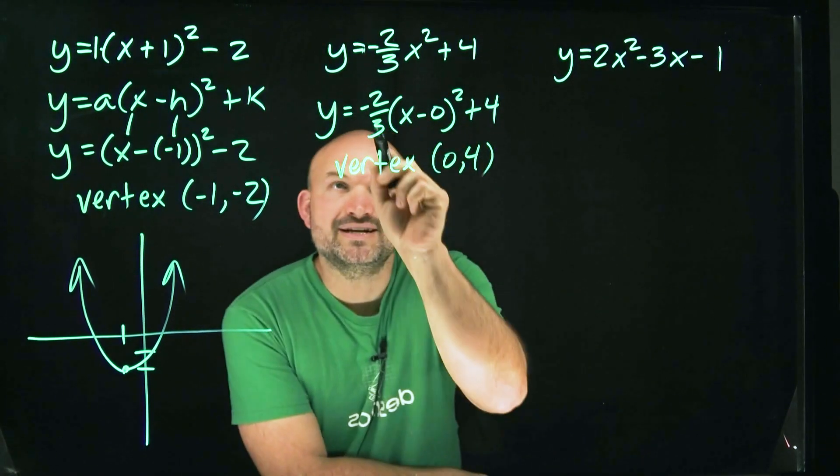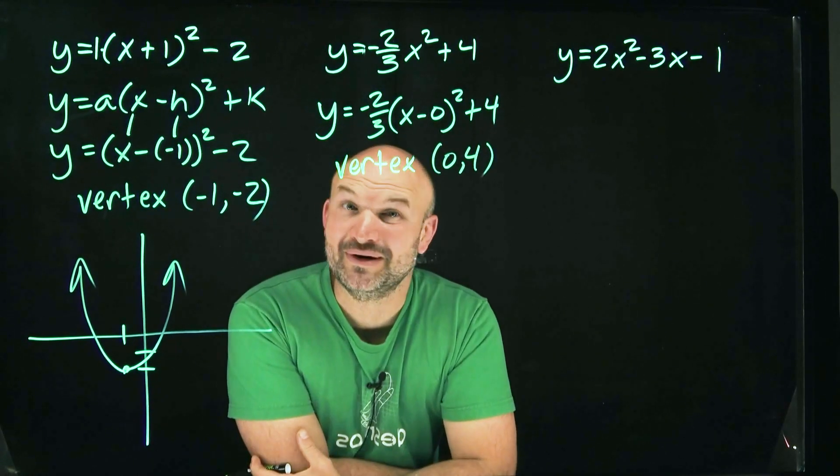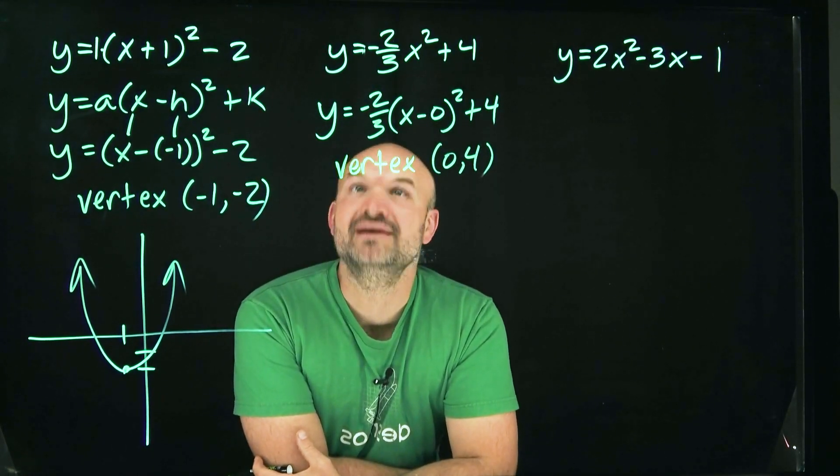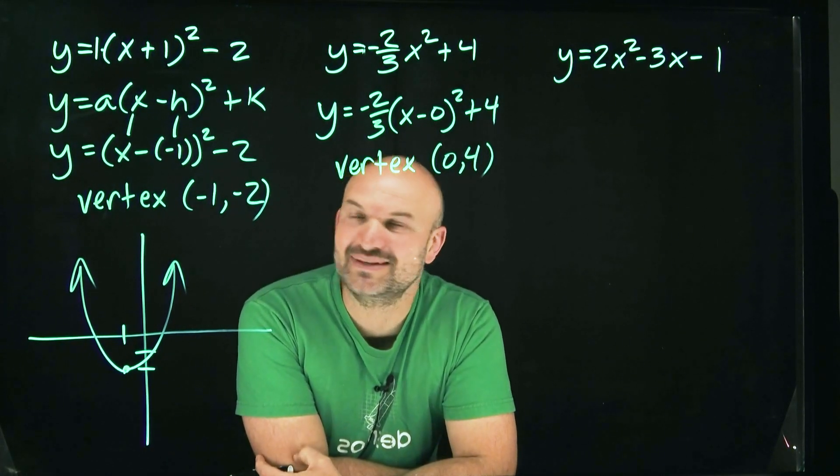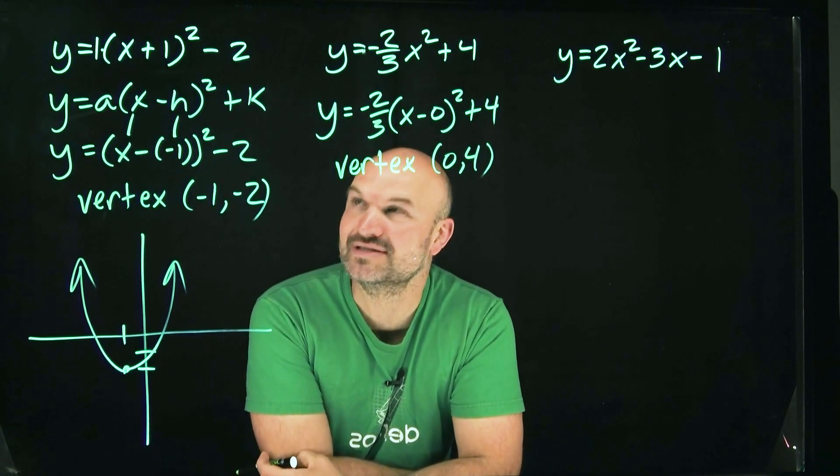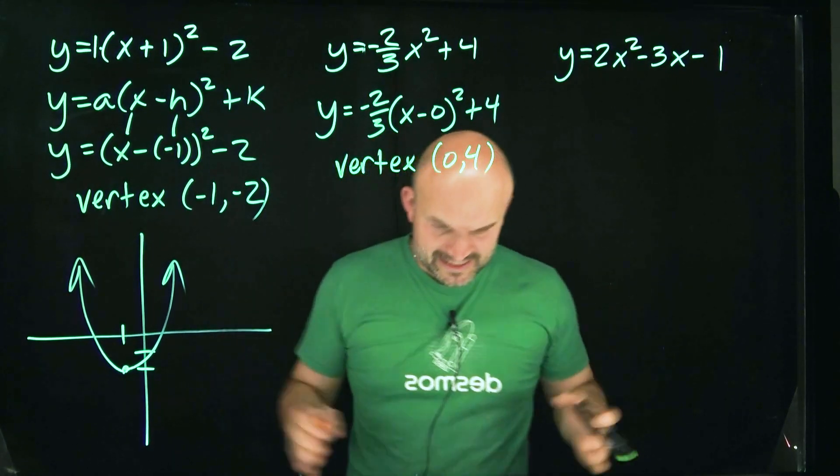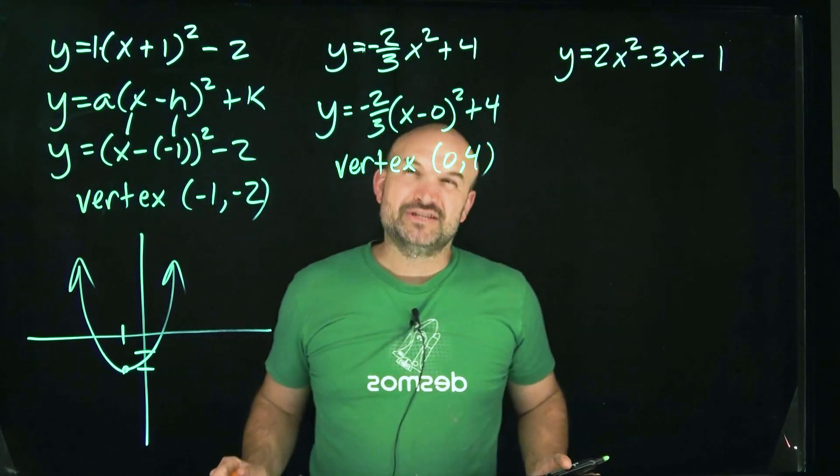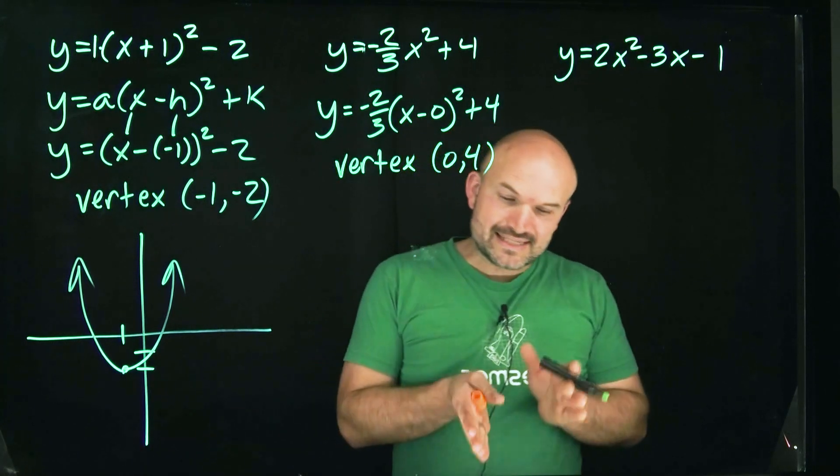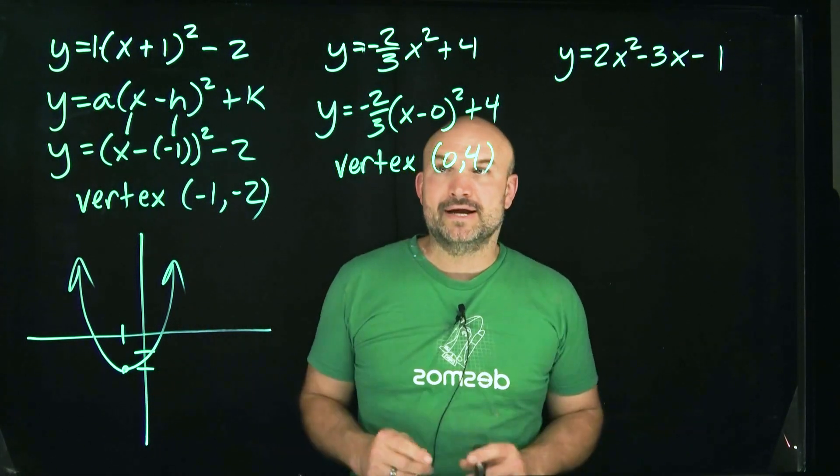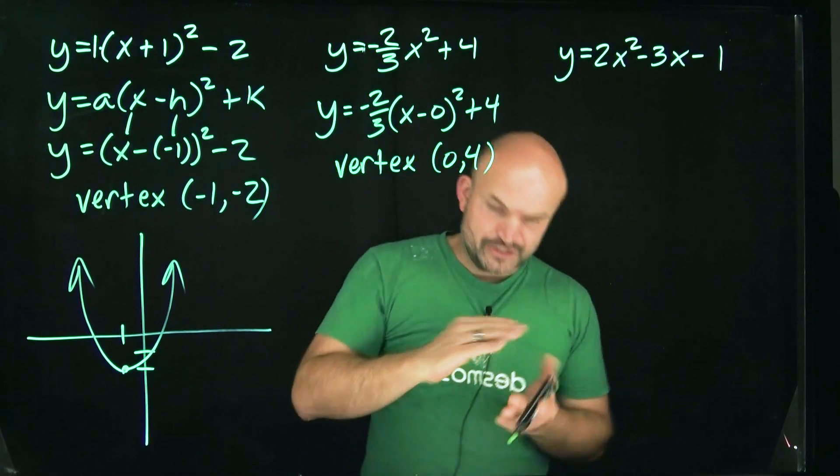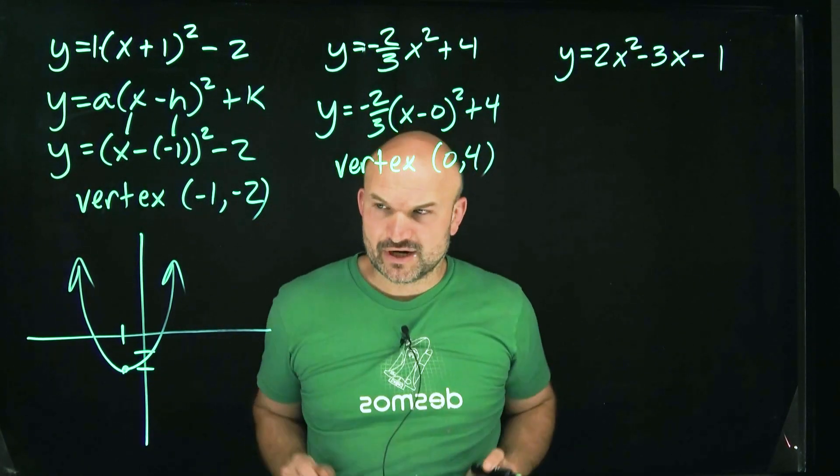But here's where we have the problem. Because our a is no longer a positive one. It's nice when it's a positive one. Now we have a negative two-thirds. What the heck are we going to do with a negative two-thirds? We know the negative means the graph is going to open down. And the two-thirds, since it's actually less than one, that is actually going to be a horizontal stretch. Or I'm sorry. It's going to be a vertical compression. It's on the outside, so it's a vertical compression.